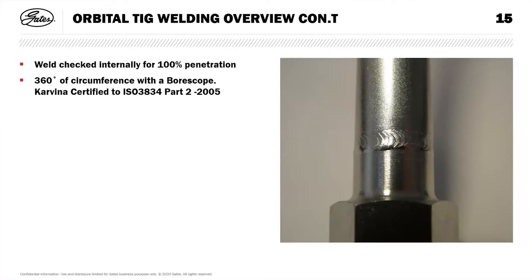It's a very good clean weld and we check 100% penetration for the complete 360 degrees of the tube. If we achieve that we know the part will not fail, and to my knowledge we've never had a failure in production since we started. Carvina is certified to ISO 3834. Another advantage of this process over brazing is that the weld is very flat, very close to the diameter of the tube, which means we can use slip-over nuts — whereas a brazed socket doesn't allow a nut to slip over, so it's a cheaper option than putting on a wire-on nut.